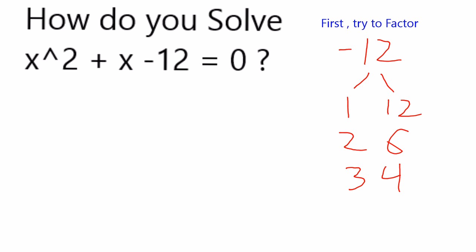The factors of 12 itself are as follows, but I want exactly one of them to be negative to give me the negative 12. Now I also want to end up with a positive 1x. So I can see that if I were to make it a negative 3 coupled with a positive 4, when I add them together, I'll end up with 1x.